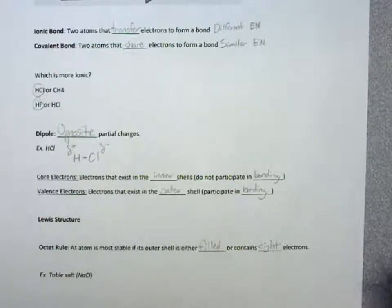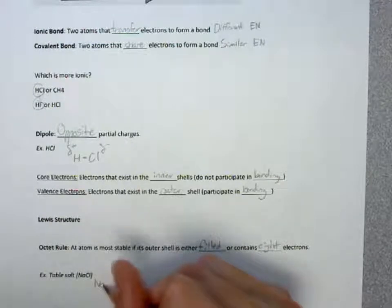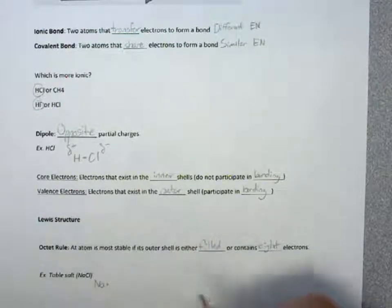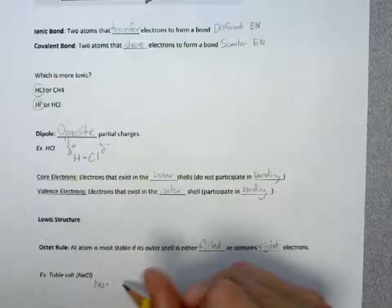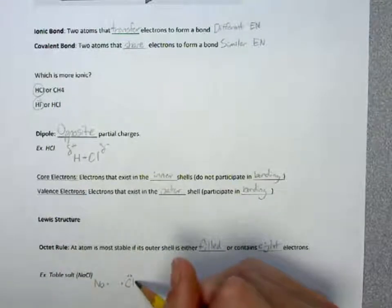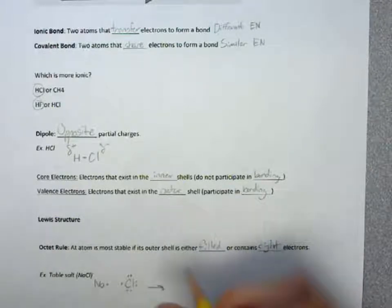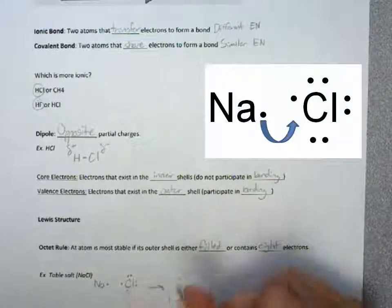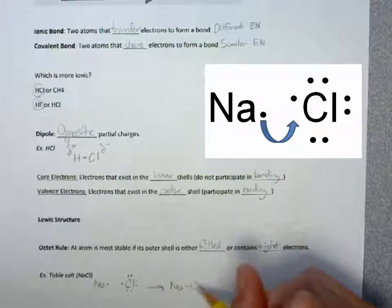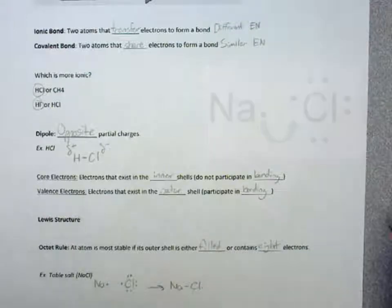If we have the Lewis structure of table salt, we have sodium. And we can have it have 1 valence electron. Then we have chlorine, which is going to have 7 valence electrons. And what's going to happen is those 2 electrons are going to form a bond. And so, this is a stable structure.